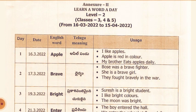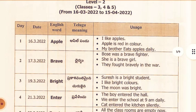On 16th March, the word is Apple. Telugu meaning: Apple Pandu. Usage examples: I like apples. Apple is red in color. My brother eats apples daily. 17th March: Brave. Telugu meaning: Dhairyam. Boss was a brave fighter. She is a brave girl. They fought bravely in the war.